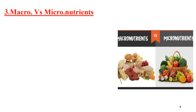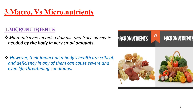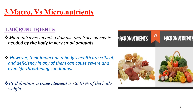The other classification is macro versus micronutrients. Micronutrients include vitamins and trace elements, because they are needed by the body in very small amounts. However, their impact on the body's health is critical, and a deficiency in any of them can cause severe, life-threatening conditions. By definition, a trace element is less than 0.01% of the body's weight. Examples include vitamins like vitamin A and trace elements like iron.